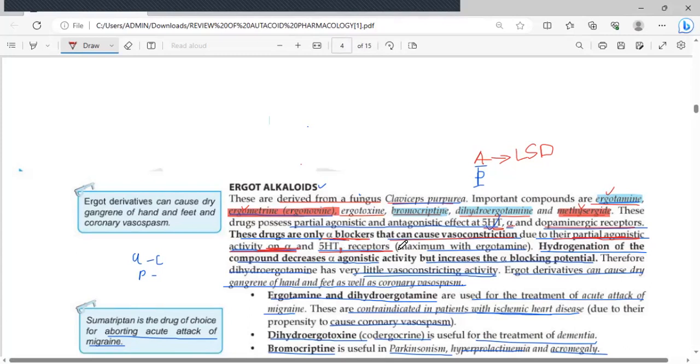That activity is maximum with ergotamine. Hydrogenation of the compounds usually decreases their alpha agonistic activity but increases the alpha-blocking potential. So dihydroergotamine, as compared to ergotamine, has very little vasoconstriction activity because it is more of an alpha-blocker than an alpha-agonist. But ergotamine, as compared to dihydroergotamine, will be more of an alpha-agonist, so it will cause vasoconstriction. It is more of an alpha-agonist than an alpha-blocker. That point is very important.